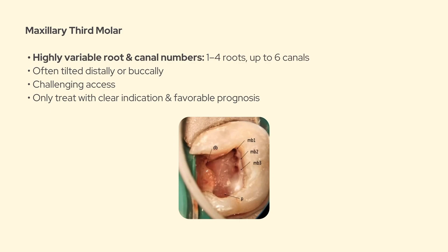The maxillary third molar is super unpredictable. It can have one to four roots and up to six canals. The access can be challenging, especially due to the distal or buccal inclination of the tooth. You'll want to approach these with caution and only do endo if there's a clear indication and a realistic prognosis.